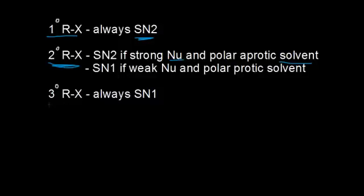Tertiary alkyl halides are always going to be SN1 because tertiary alkyl halides produce tertiary carbocations, which are very stable. SN2 mechanisms wouldn't really happen for tertiary alkyl halides because there'd be too much steric hindrance — too much stuff in the way.